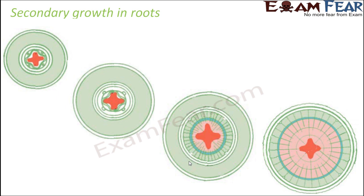Secondary growth also happens in roots in a very similar way. As mentioned, it is only that the inside xylem-phloem arrangement is a little different. In the root, the red colored structure is xylem and the green structures are phloem in a radial arrangement — one xylem, one phloem alternating. The vascular cambium forms in between them, and will form secondary xylem inside and secondary phloem outside. These secondary layers increase the thickness. After this, cork cambium is formed, which again forms cork outside and secondary cortex inside. The steps are the same; it is just that the structure of the dicot root is a little different from the dicot stem.